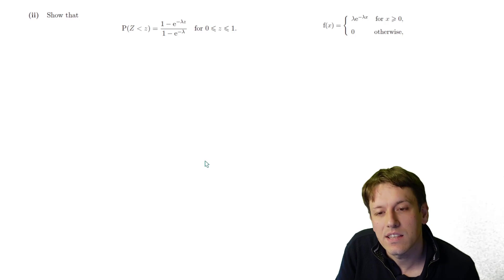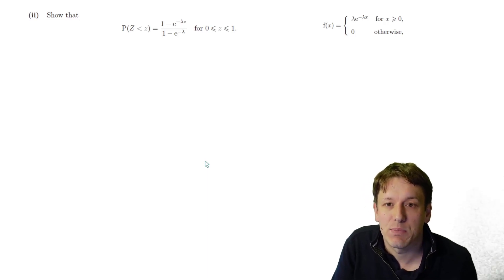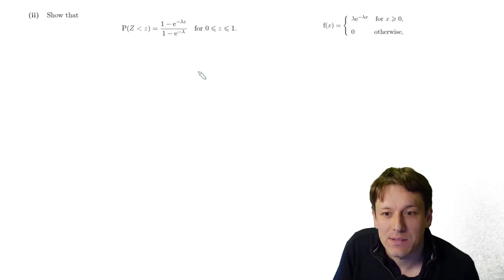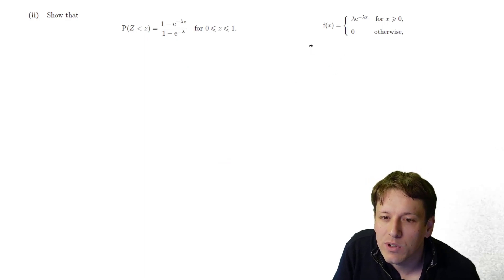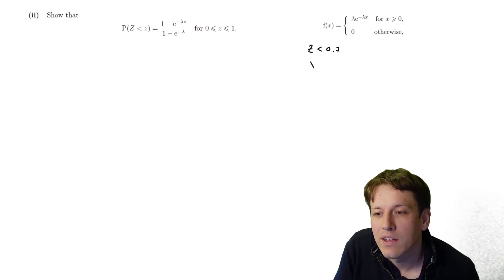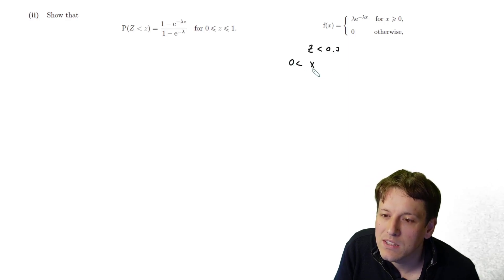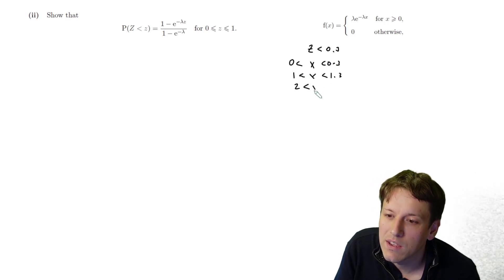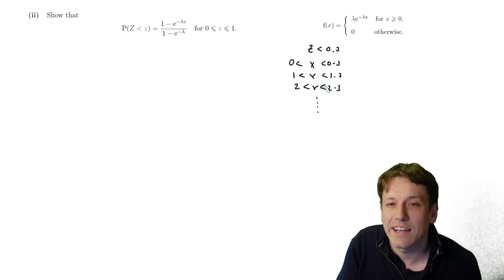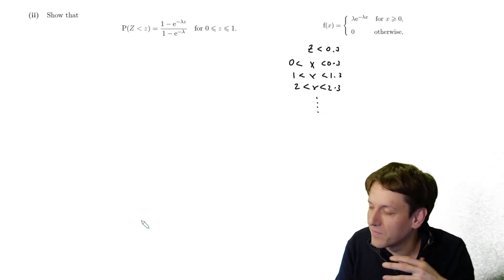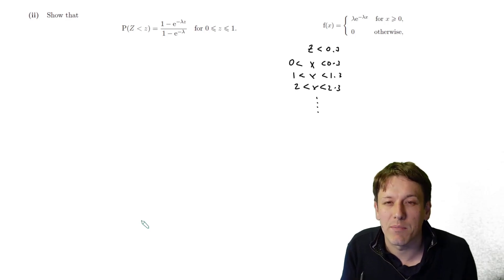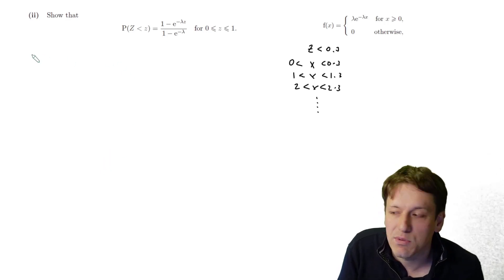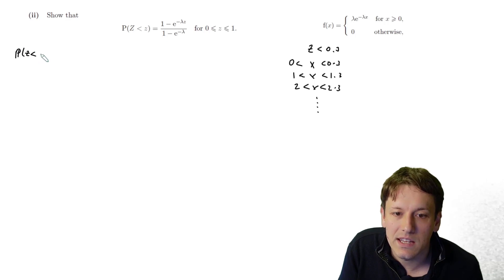Part two asks us to show that P(Z < z) equals a given expression for any z between 0 and 1. Remember Z is the fractional part of X. For Z to be less than 0.3, for example, X could be between 0 and 0.3, between 1 and 1.3, between 2 and 2.3, and so on — we add all these possibilities together.